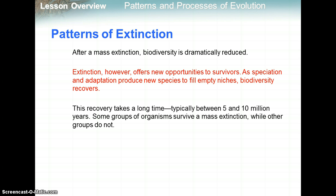After a mass extinction, biodiversity is dramatically reduced, but it creates a clean slate. Extinction offers new opportunities for survivors. As speciation and adaptation produce new species to fill the empty niches, biodiversity recovers. Mammals are an example — we probably would not be here if the dinosaurs had not gone extinct. Some small mammals survived and proliferated, filling the niches the dinosaurs left. This recovery typically takes between 5 and 10 million years — a short time on a geological scale, but very long for us.